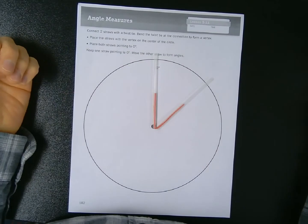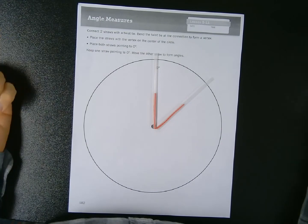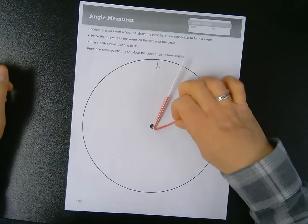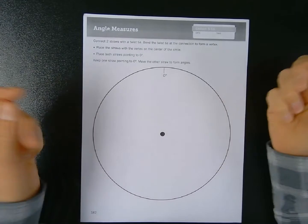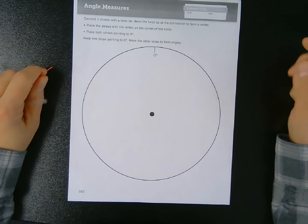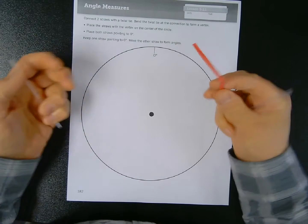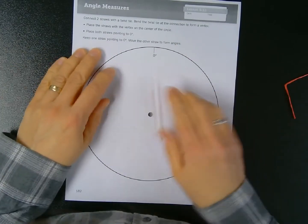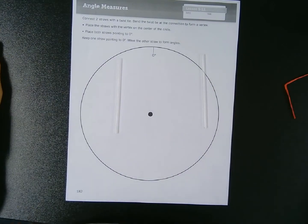Now I know what you're thinking - Mr. Wassman, I'm at home watching this on YouTube, I don't have straws laying around. Single-use straws are bad for the environment. Or maybe you're thinking I don't have twist ties because we made all this artisanal sourdough bread during quarantine and now we've got bread for days and don't need to buy bread to get twist ties from the package.